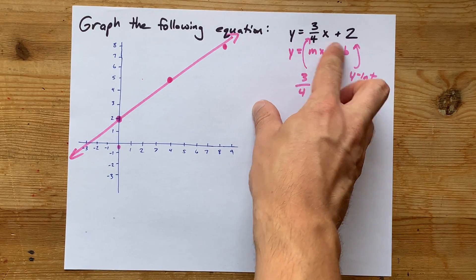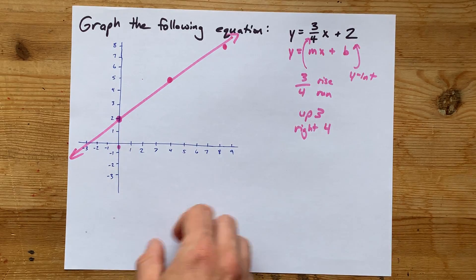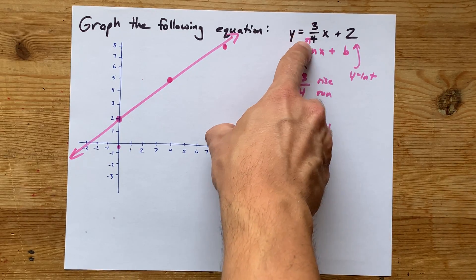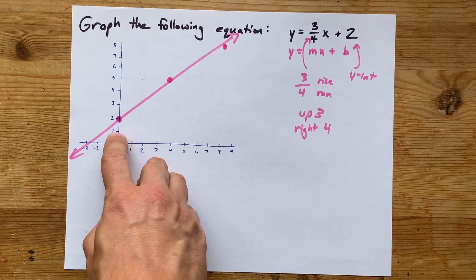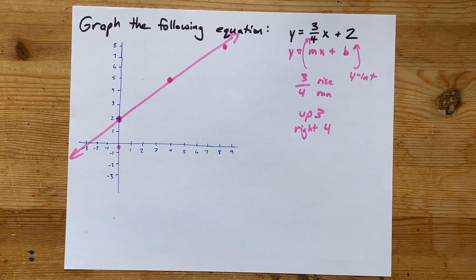this was already in y equals mx plus b form. b is your y-intercept. Put a dot there. Slope, m, gives you the rise and run. Tells you how far up and over to go. Bam. Done. Best of luck.